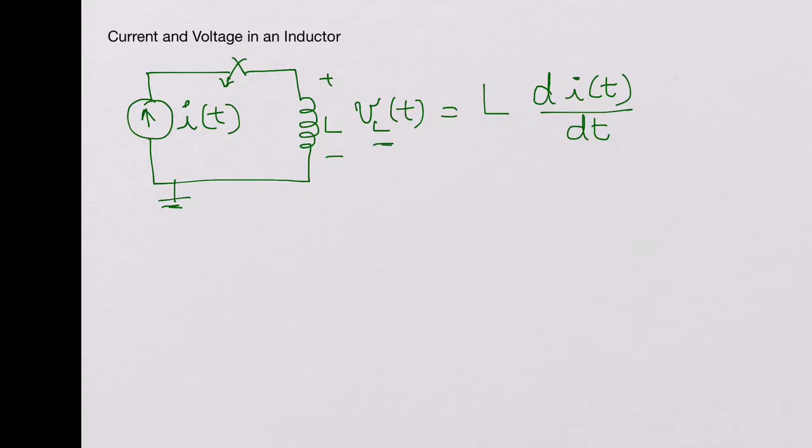So the voltage across the inductor is developed only when there is a change in the current. So if I(t) is a DC current that does not change with time, then VL(t) at any t would be 0.